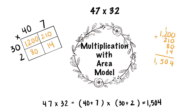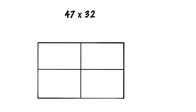Welcome back, Math Grizz! Today, we will learn multiplication with an area model. The problem is 47 times 32. We will use an area model to solve this.